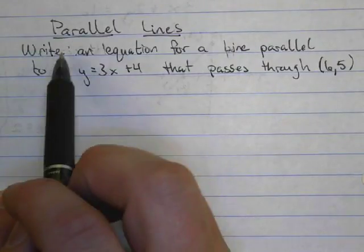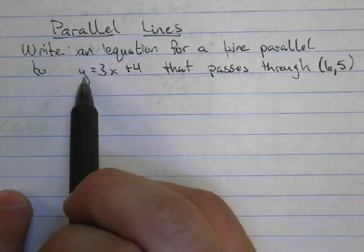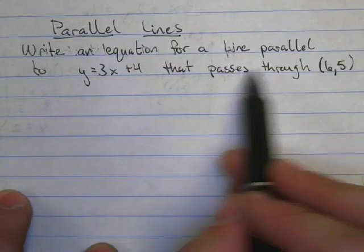So we're going to write an equation for a line parallel to y equals 3x plus 4 that passes through 6 comma 5.